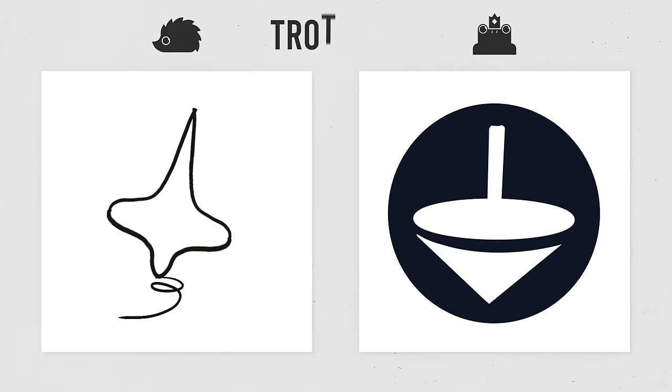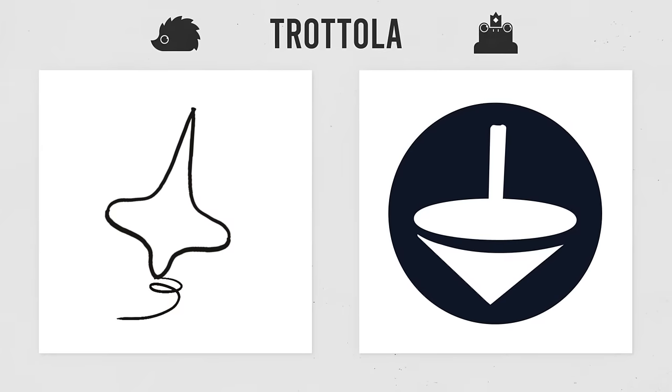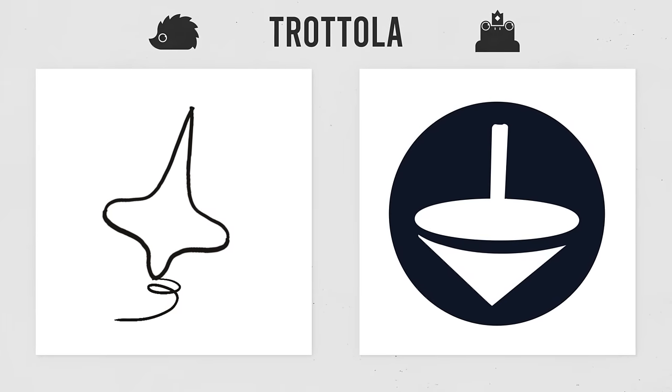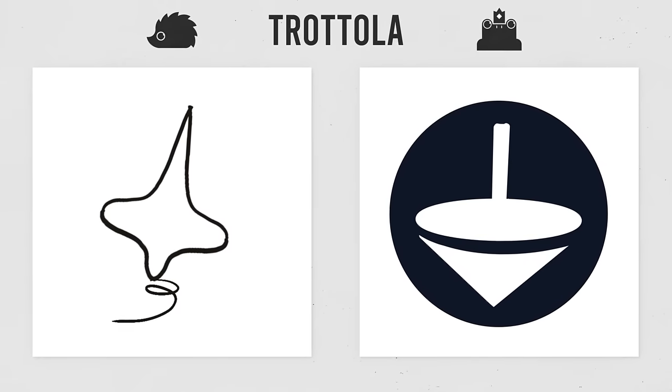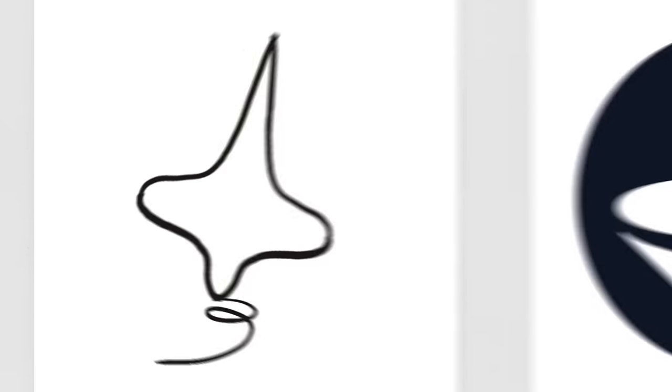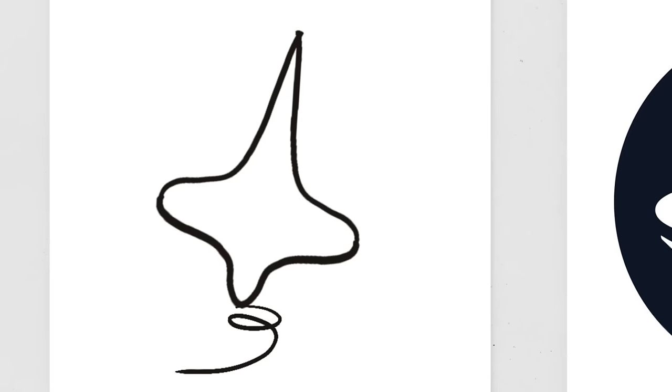Three, two, one. So, it is a spinning top. We confirm — it is a spinning top. At this point, the most minimal one is the one with the fewest elements, which is Rick's. Why? Because it is only made of lines.